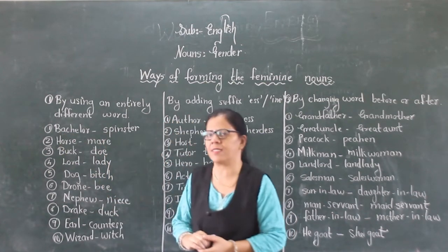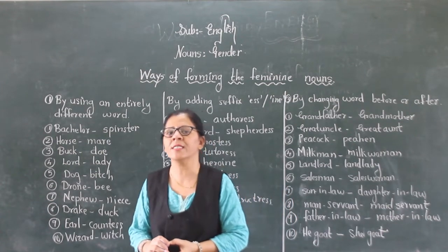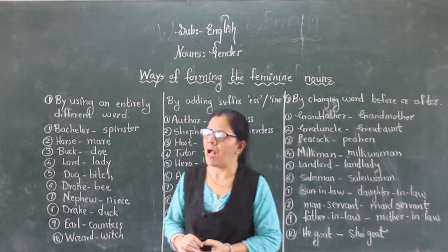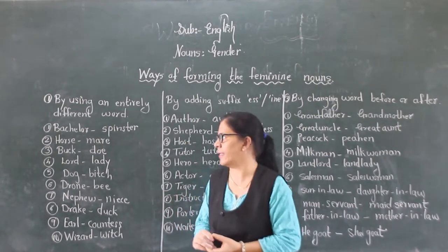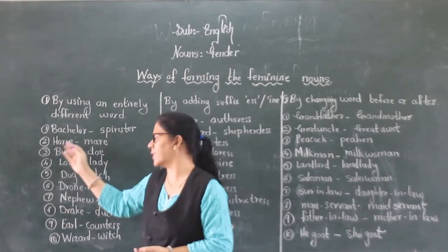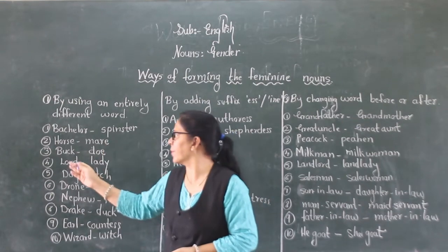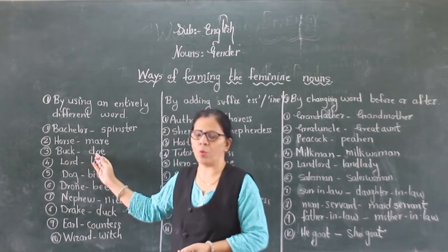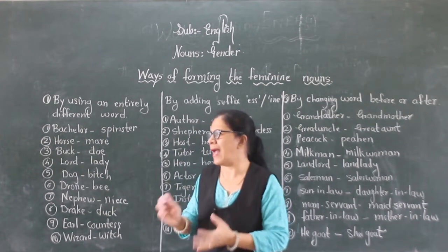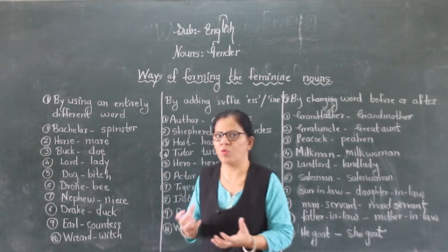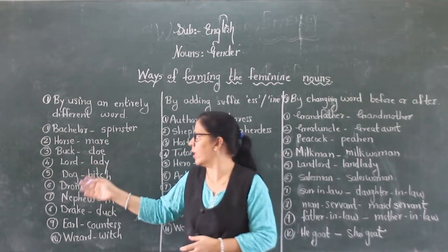Bachelor, spinster. What do you mean by bachelor? Bachelor is a man who is unmarried. And spinster is a girl or lady who is unmarried. Next, horse, mare — a female horse is called a mare. Buck, doe — buck is a male animal, maybe a deer or a rabbit. So male is buck and female is doe.